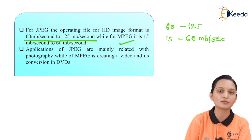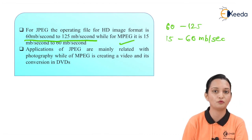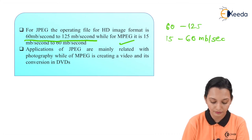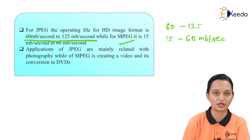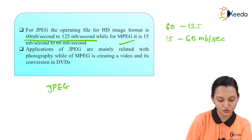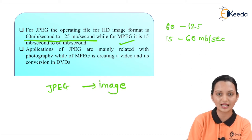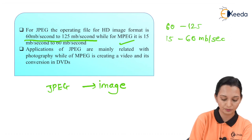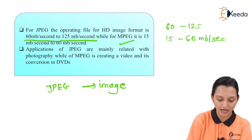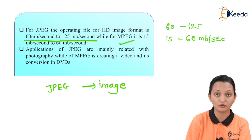MPEG is therefore much more useful than JPEG from a bandwidth perspective. The applications of JPEG are mainly related to photography, because JPEG is used to store images. So with images, photography is the primary application, and the applications of JPEG are mainly related to photography.